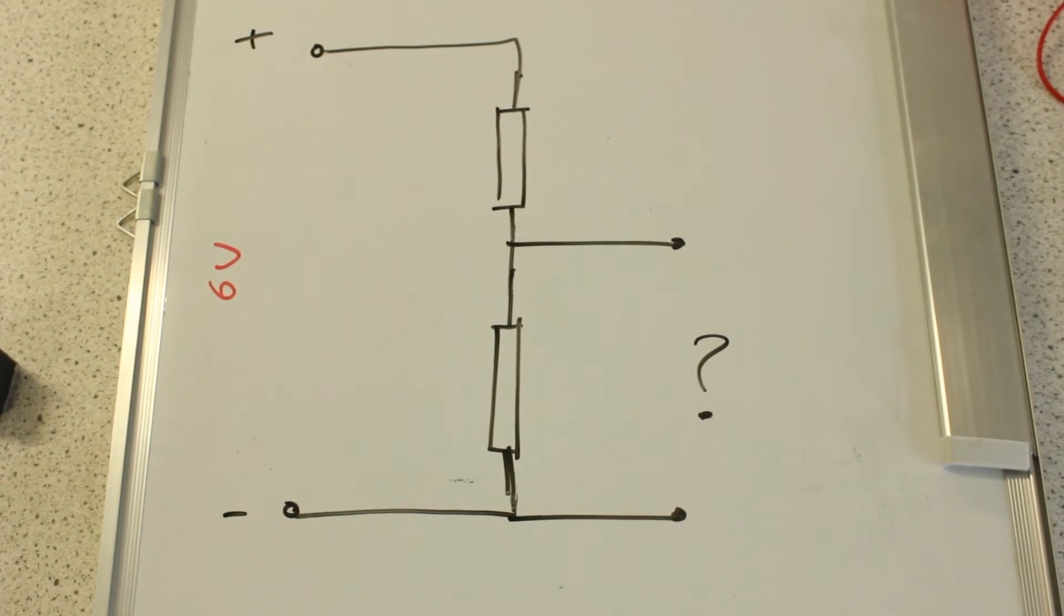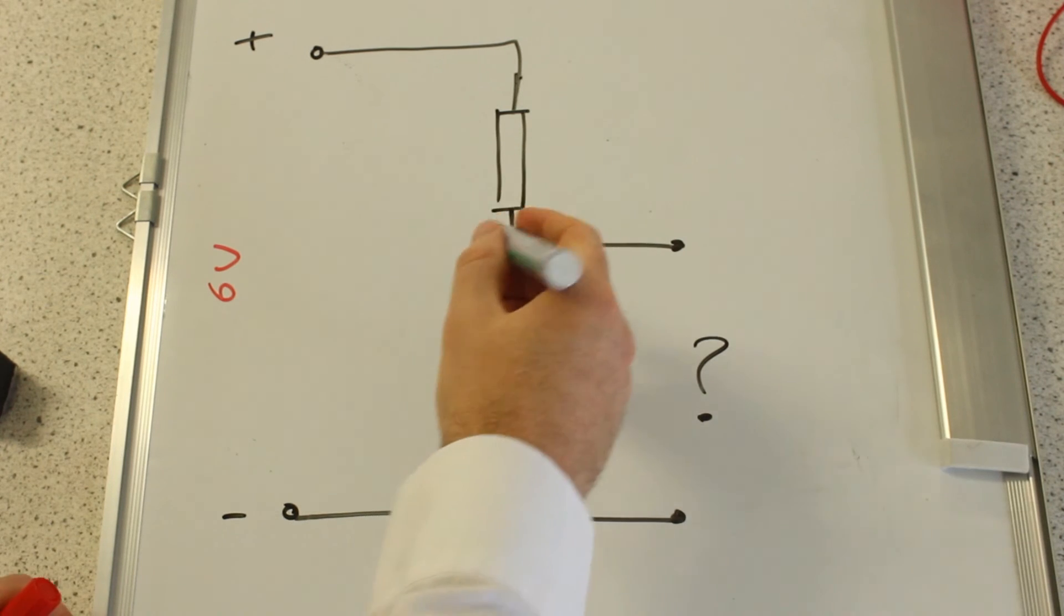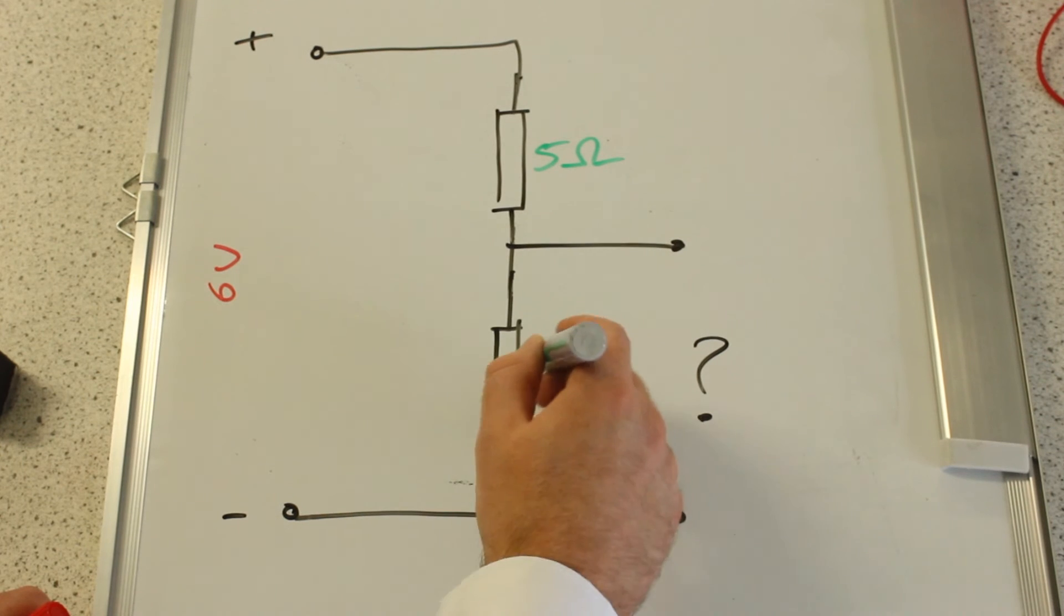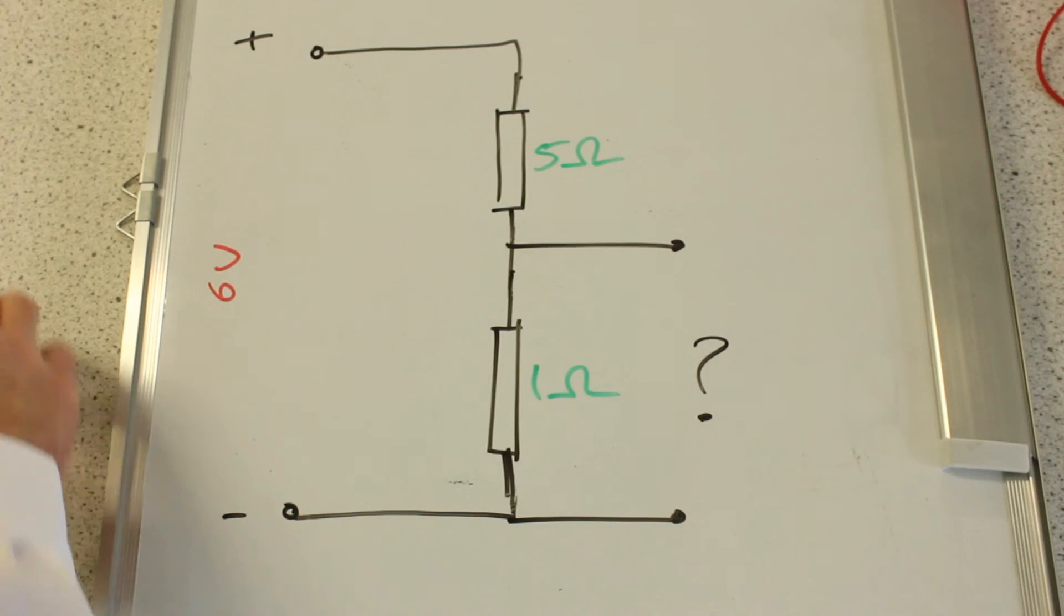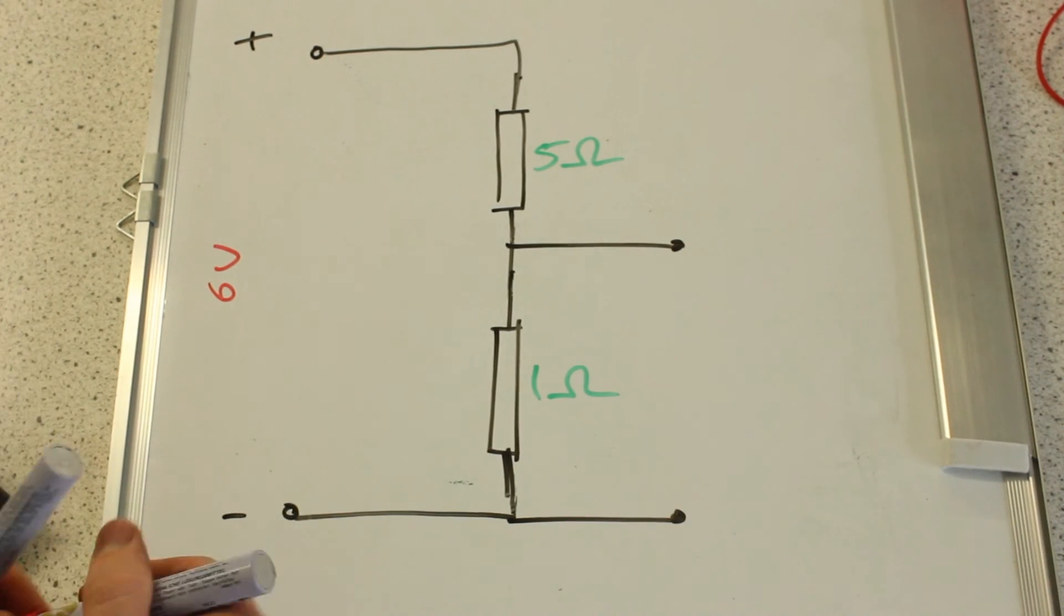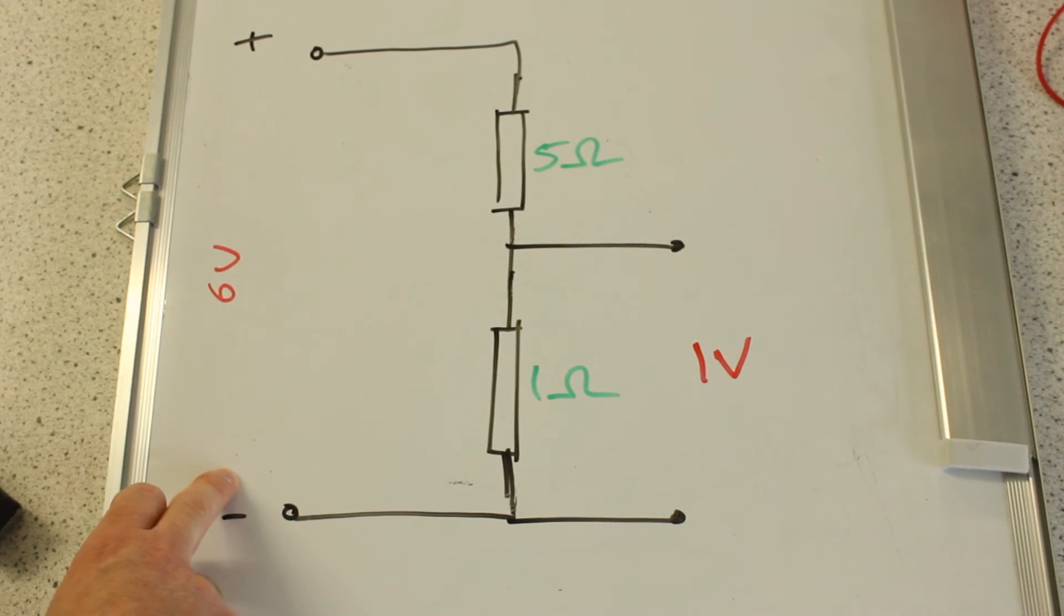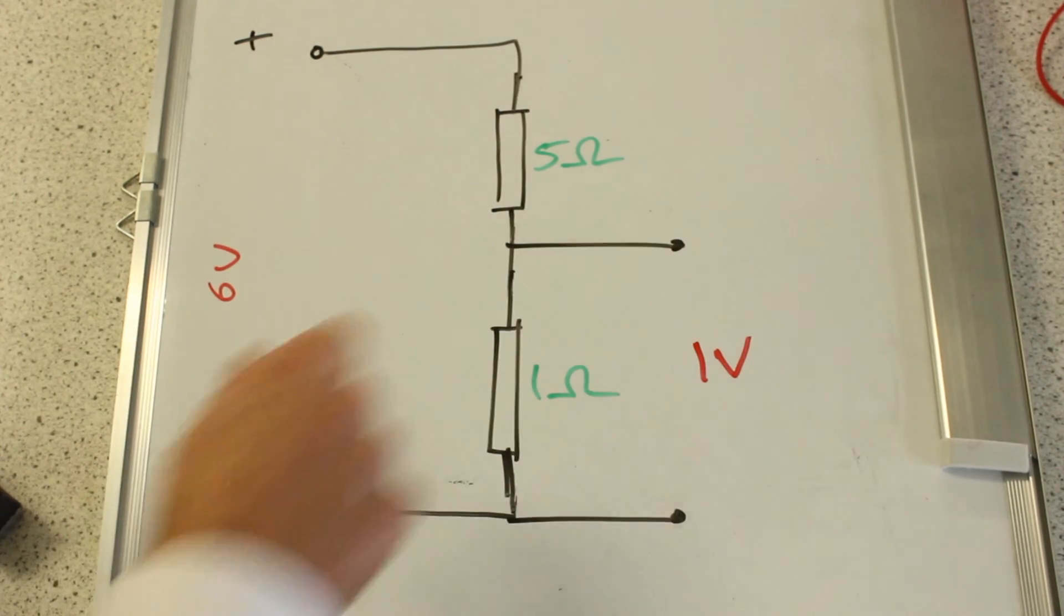Let's say this ratio was 5 ohms to 1 ohm. Well, that would be a very simple one to work out. You'd say that this had a voltage of 1 volt across it because this voltage, 6 volts between here and here, is shared out in the ratio 5 across here to 1 across there.